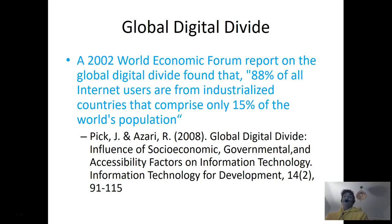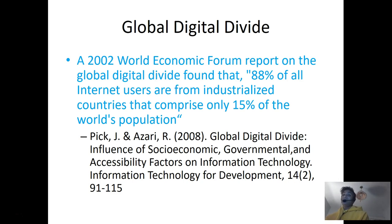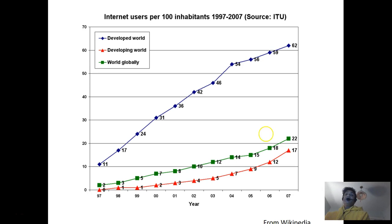Back in 2002, 88% of all internet users were from rich countries, yet those people comprised only 15% of the world's population. Things have changed since then, but as recently as 10 years ago almost all internet use was in rich countries, a minority of the human population. This graph shows world internet use going up steadily, with rich countries exploding upward while poor countries track more slowly — that gap between the curves is the digital divide we're talking about.